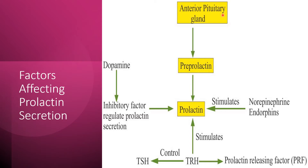Prolactin stimulates the secretion of dopamine and somatostatin, which in turn inhibit prolactin secretion. Dopamine is a potent inhibitor of prolactin secretion and is used in the treatment of hyperprolactinemia to stop excessive milk production. Whenever there is an increase in prolactin level in the blood, dopamine and dopamine agonists are used as inhibitors of prolactin secretion. Dopamine antagonists are used when there is decreased prolactin level.